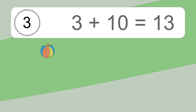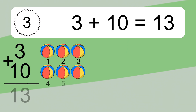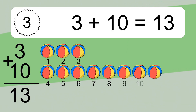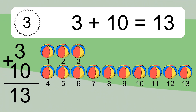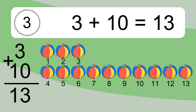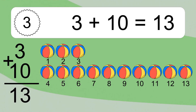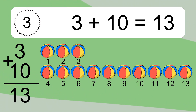3 plus 10 equals what? 3 plus 10 equals 13. Let's count it. 1, 2, 3, 4, 5, 6, 7, 8, 9, 10, 11, 12, 13.